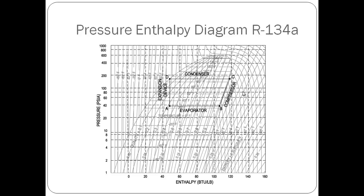Finally, the refrigerant is expanded back to point A at constant enthalpy. The net refrigeration effect is defined as the difference of the enthalpies leaving and entering the evaporator, which is shown as the path from A to B.